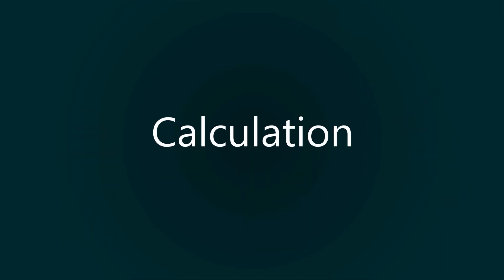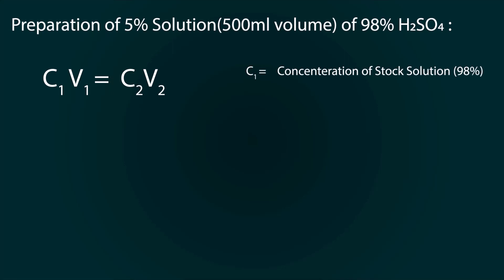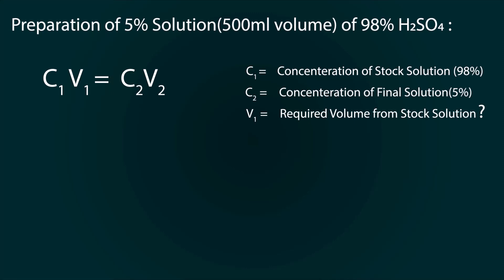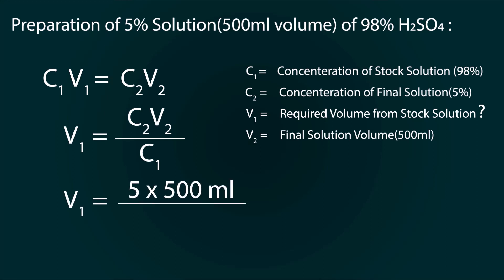We need some calculations before preparation of the solution. Preparation of 5% sulfuric acid solution from 98% H2SO4. The formula of concentration is C1V1 = C2V2. C1 is the concentration of the stock solution, which is 98%. C2 is the concentration of the final solution, which is 5%. V1 is the required volume from the stock solution. V2 is the final solution volume, which is 500 ml. Rearranging the formula and putting in the values, we get 25.51 ml.